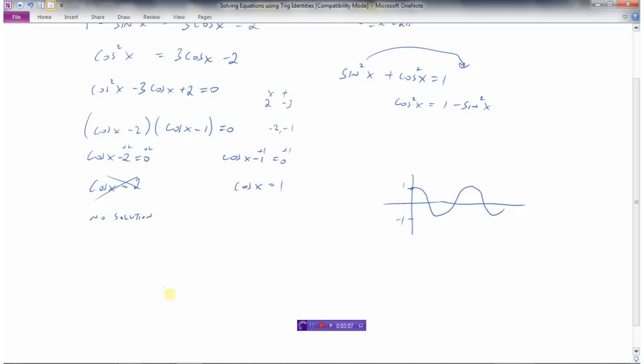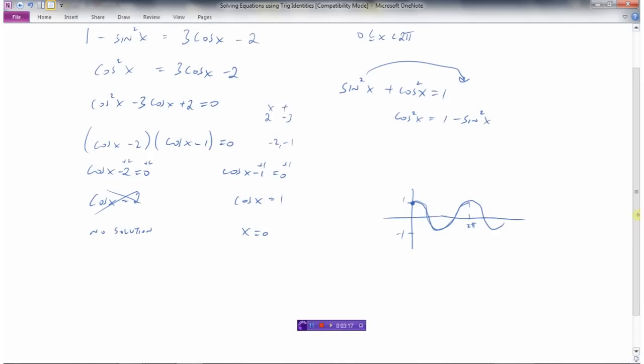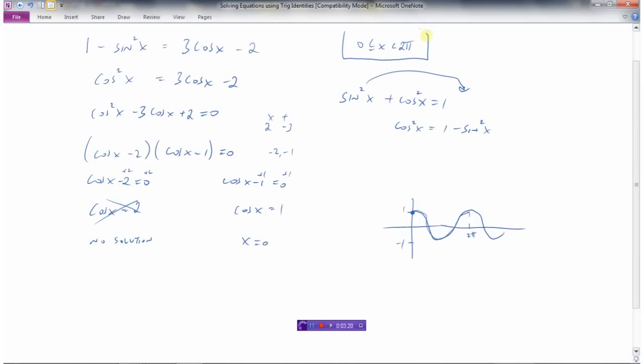For cos x = 1, we know that cos x = 1 when x is 0, and it doesn't happen again until 2π. But if we look back at our restrictions on x, we're asked only to find the angles between 0 and 2π. So the only place where cos x is going to equal 1 is at 0, because 2π is not in our domain. It's got to be smaller than 2π. So x = 0 would be our only solution.